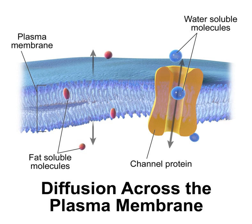The permeability of a membrane is the rate of passive diffusion of molecules through the membrane; these molecules are known as permeant molecules. Permeability depends mainly on the electric charge and polarity of the molecule and to a lesser extent the molar mass of the molecule. Due to the cell membrane's hydrophobic nature, small electrically neutral molecules pass through more easily than charged, large ones. The inability of charged molecules to pass through the cell membrane results in pH partition of substances throughout the fluid compartments of the body.